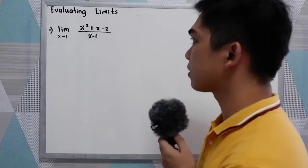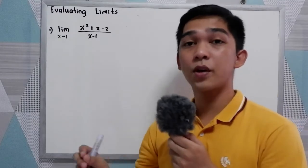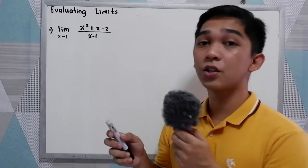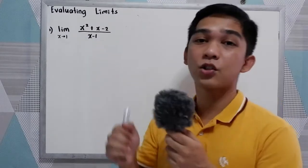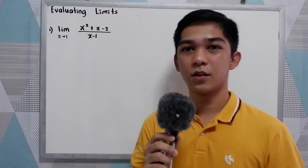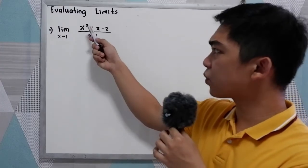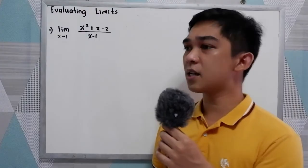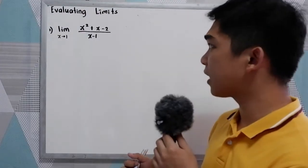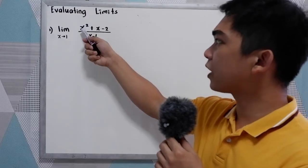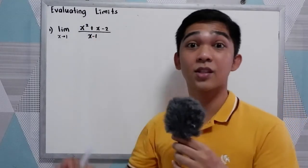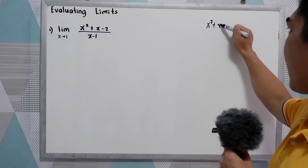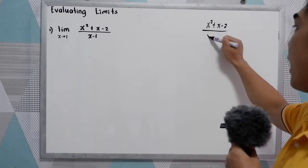So in evaluating limits, check if our given function can be written in simplest form. So in this case, we have x squared plus x minus 2 all over x minus 1. Let us check using factoring techniques if our numerator and denominator have the same expression that can cancel out. So we have x squared plus x minus 2 all over x minus 1.